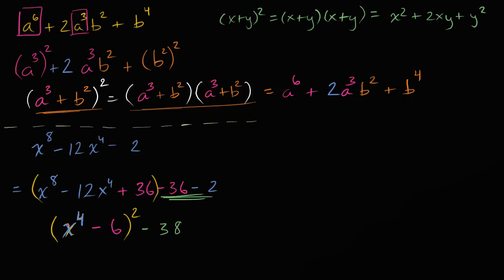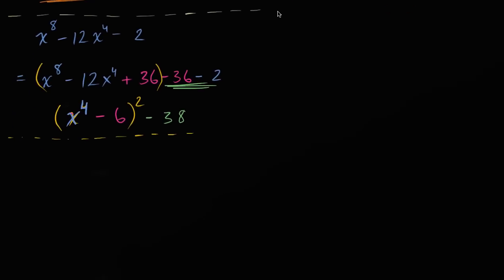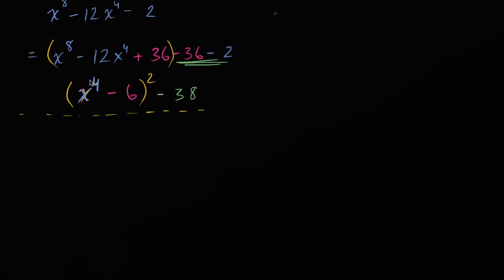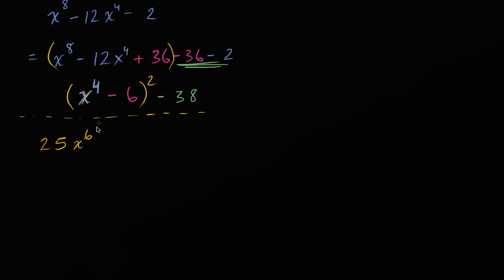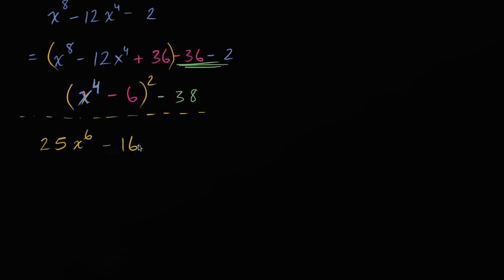Let's do one more just to really exercise this muscle. This isn't a new skill — it's just applying an old skill to slightly more complex things, or realizing they aren't that much more complex. Let's say that we have 25x to the sixth minus 16y squared.